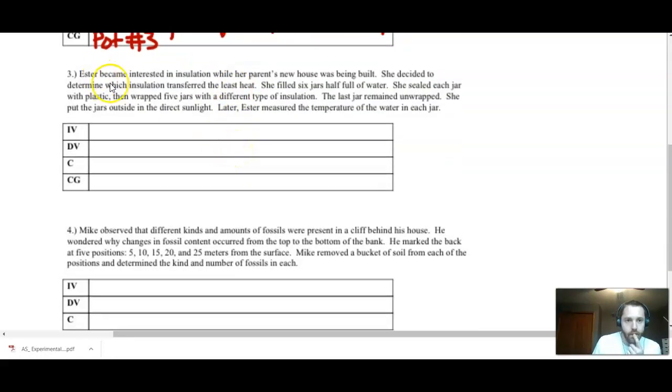Coming down to experiment number three. Again, pause the video, try these out, fast forward, see if you got them correct. If not, come back and listen to this explanation. So question three, Esther became interested in insulation. That's going to be the stuff up in your attic that helps trap heat. While her parents' new house was being built, she decided to determine which insulation transferred the least heat. So she filled six jars, half full of water. She sealed each jar with plastic, then wrapped five jars with a different type of insulation. The last jar remained unwrapped. She then put the jars outside in direct sunlight. Later, Esther measured the temperature of water in each jar. Our independent variable in this case, what is it that she is changing? She is changing the type of insulation.